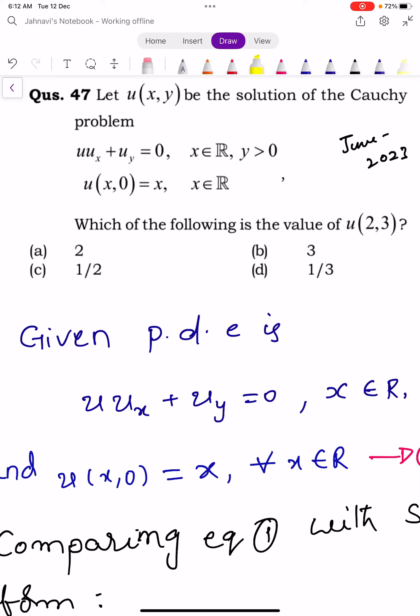Let u(x,y) be the solution of the Cauchy problem u*ux + uy = 0 for all x belongs to R and y > 0, with u(x,0) = x for all x belongs to R. Which of the following is the value of u(2,3)? This is a question from section B which carries 3 marks.